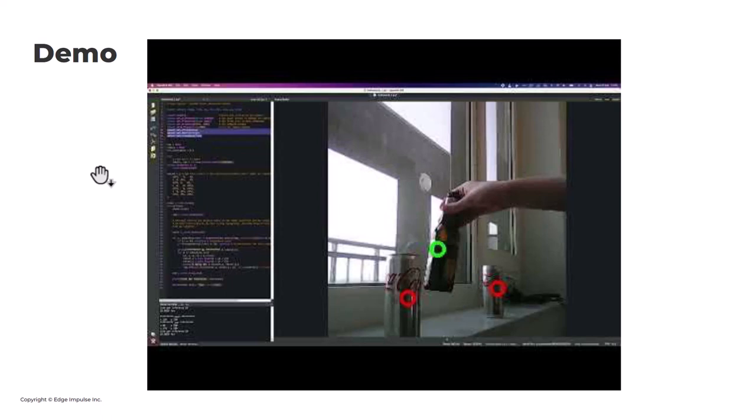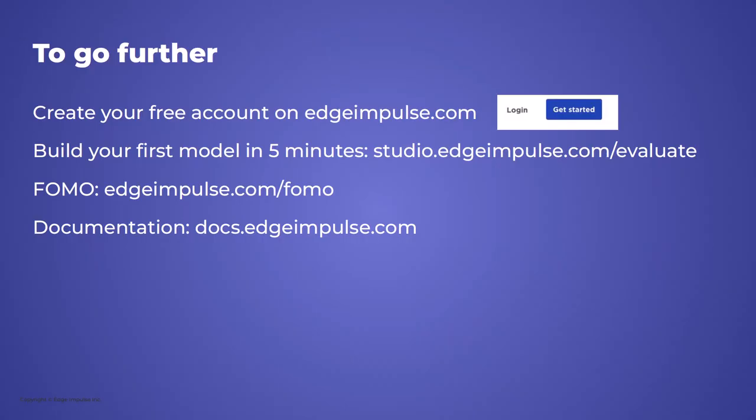You can stop by our booth — I've got a FOMO demo counting coke cans and beer cans, running at around 29 frames per second. If you want to go further, feel free to create an account on Edge Impulse. I wrote a lot of documentation about FOMO — visit EdgeImpulse.com/FOMO or our documentation website. If you just want to get started with Edge Impulse, we have a getting-started wizard where you can build a keyword spotting model in less than five minutes, just by recording your own voice and being guided through the wizard.